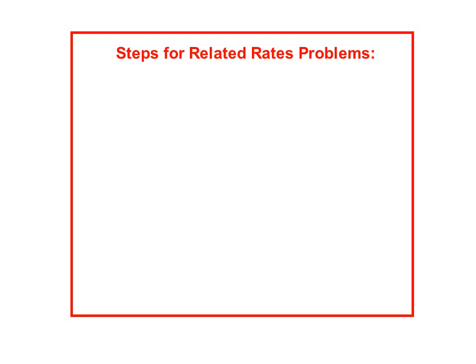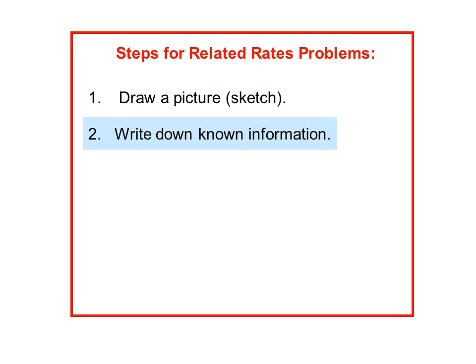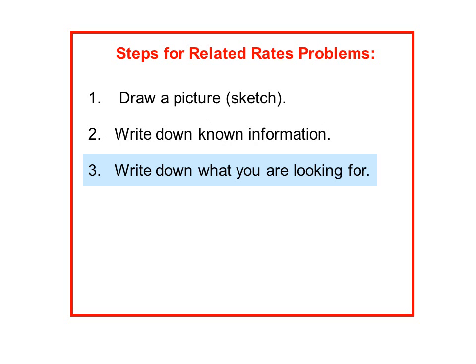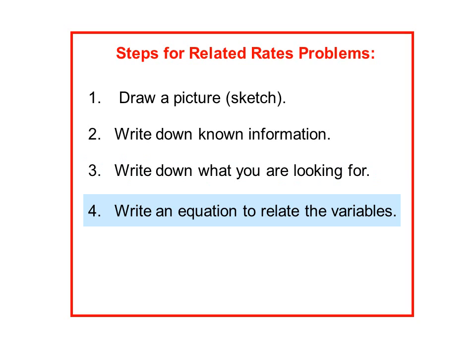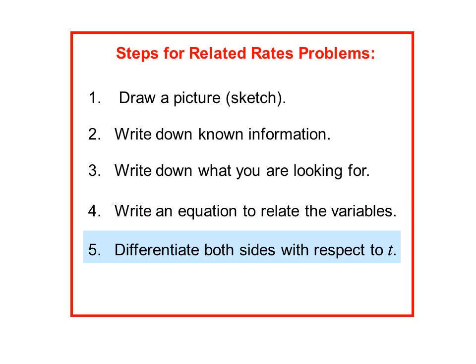The steps for related rates problems. Step 1: Draw a picture or sketch. Step 2: Write down known information. Step 3: Write down what you are looking for. Step 4: Write an equation to relate the variables. Step 5: Differentiate both sides with respect to t.